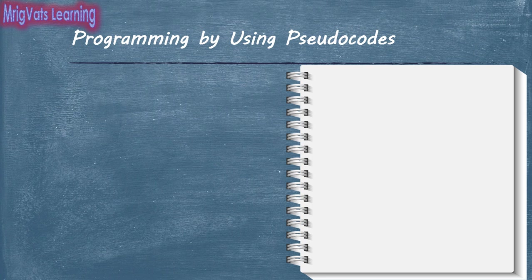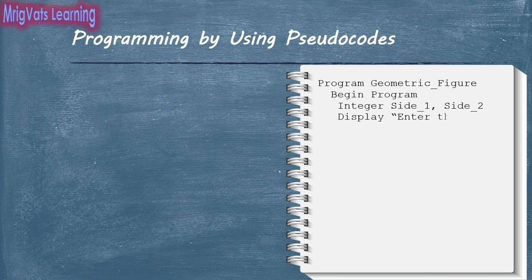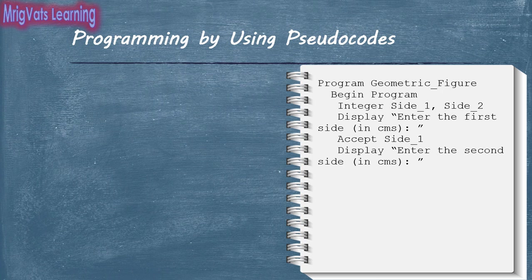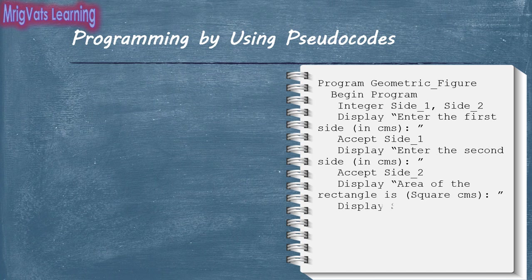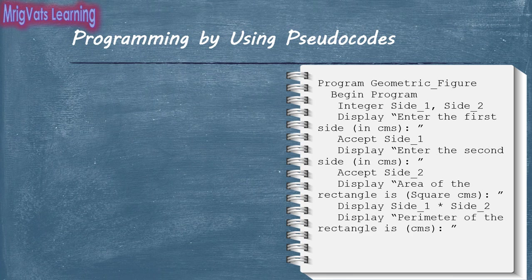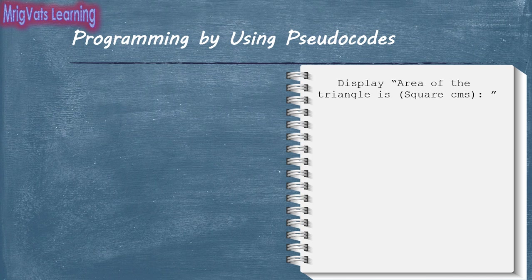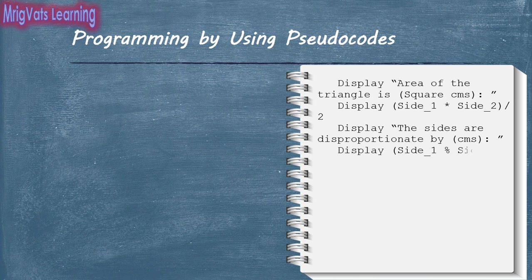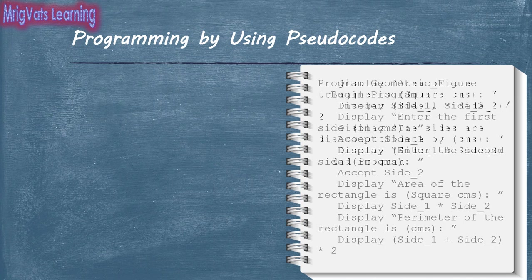The program is titled Geometric Figure. It begins with the Begin Program statement, declares integer variables Side1 and Side2, prompts the user to enter the first and second sides in centimeters, accepts those values, and performs the required calculations before ending with the End Program statement.